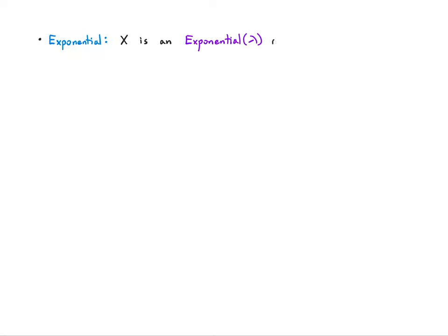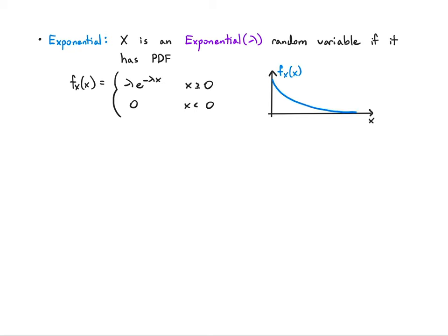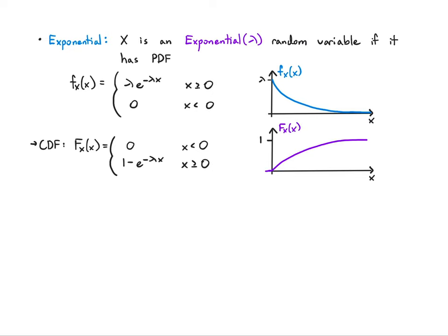Next we have the exponential family. X is an exponential(λ) random variable if its PDF is λ·e^(−λx) for x ≥ 0, and zero otherwise — so it's always non-negative. The CDF, obtained by integration, is 1 − e^(−λx). The mean is one over λ and the variance is one over λ squared.